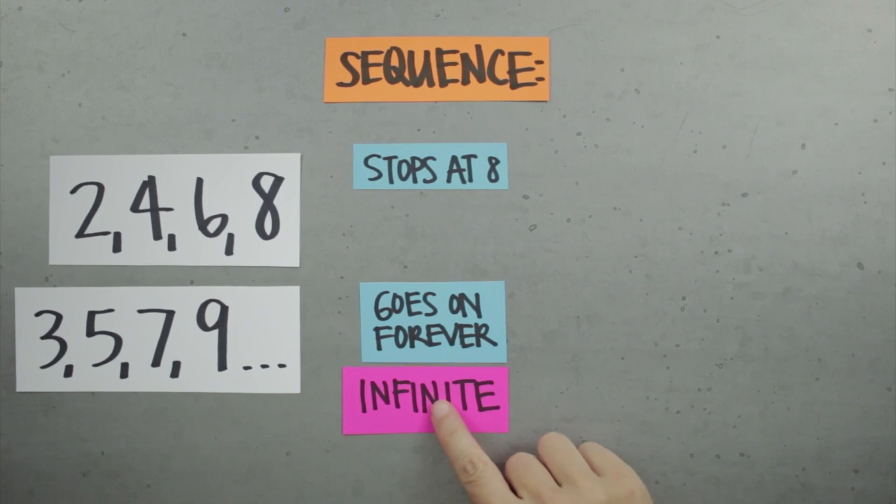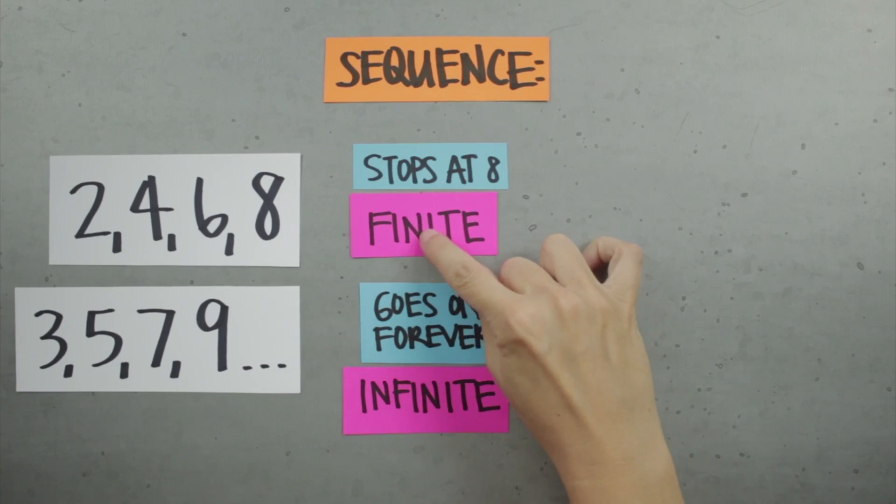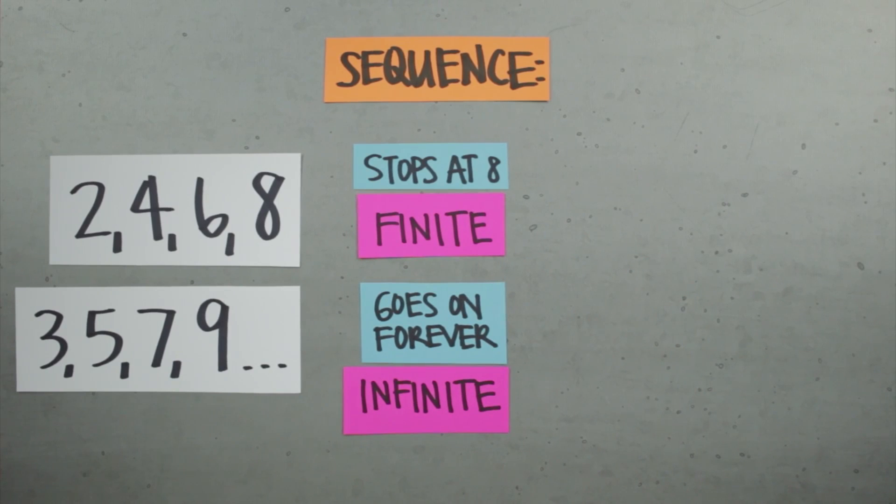So this sequence is called an infinite sequence because it goes on infinitely, and this sequence is called a finite sequence because it stops at a particular term so it finishes and it's finite.